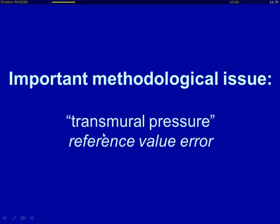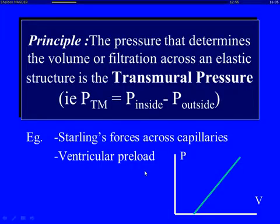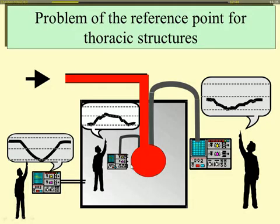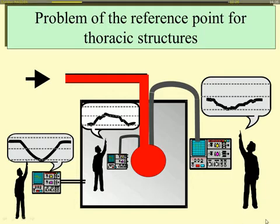Let me start with the methodological issue — the point about transmural pressure and a reference value. The important force for distending a ventricle, distending a vessel, for capillary filtration is inside minus outside, which we call transmural pressure. The problem is we reference our catheters and transducers to atmosphere. To show an example: let's say we have a box which surrounds the heart — this red thing, or a balloon — with a person inside with a monitor, a person outside measuring the pressure changes across the box, and another person measuring the hemodynamic pressures in this balloon outside the box, which is what we do.